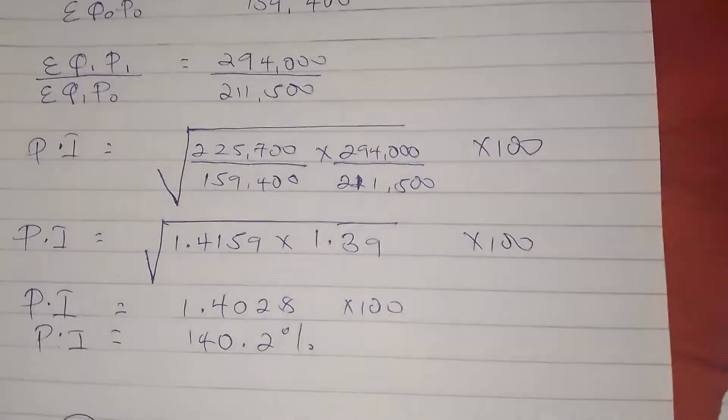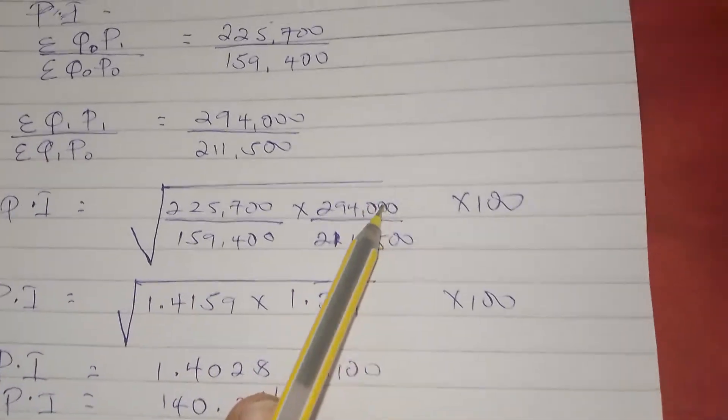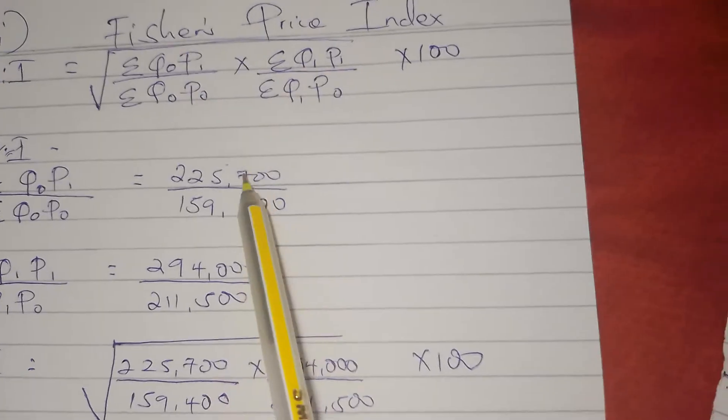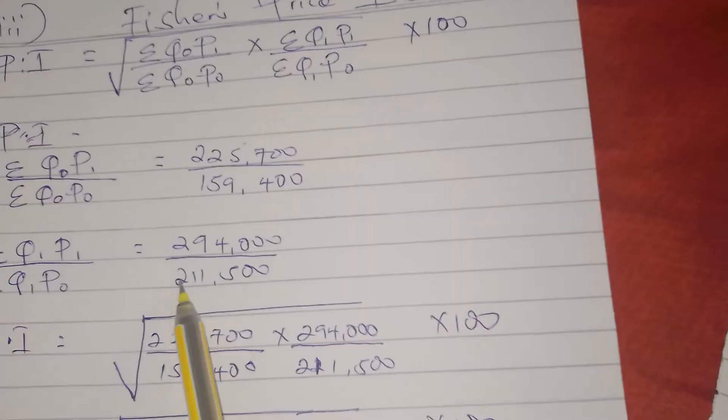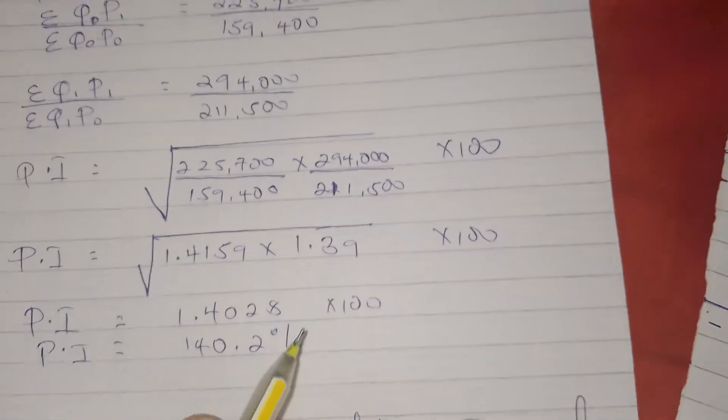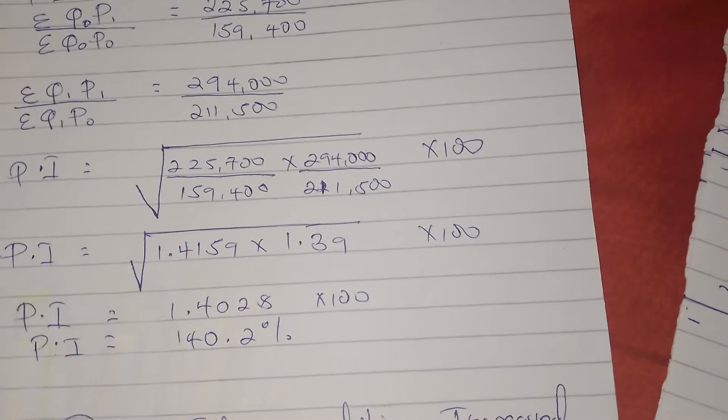After we just substitute in the formula, we get the figures the way they are. This times this, so we get this times this, we put the square root, then times 100. Now we put that in the calculator.